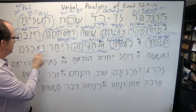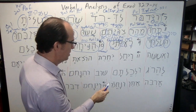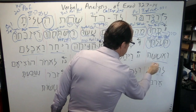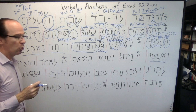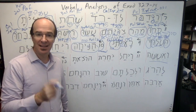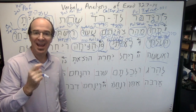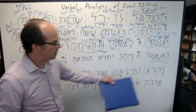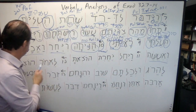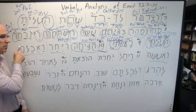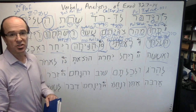The next few words — notice these next three — this is a sequence of jussives and cohortatives. Jussives and cohortatives look a lot like regular imperfects. The cohortative will often add a hey at the end, but that's a third-hey anyway for this particular verb — so it would have been there anyway. And because it's adding a suffix, we don't see it here. The jussive looks just like an imperfect.